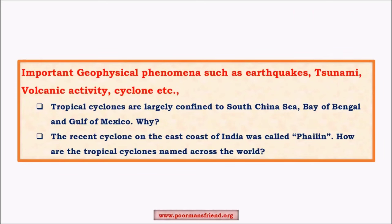Important geographical phenomena — earthquakes, tsunamis, volcanic activity, cyclones — combine concepts from physical geomorphology and climatology. Tropical cyclones are a climatological geographical phenomenon. For example, the recent cyclone on the east coast of India called Phailin — this type of question has answers on the IMD website. Keep track of relevant websites. The Indian Meteorological Department website has many important questions, and notes on these are posted on the blog poormansstrand.org.